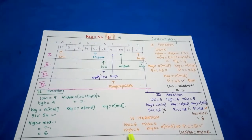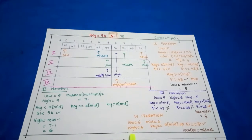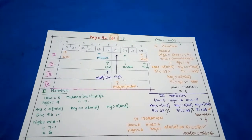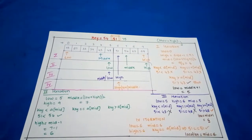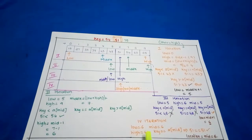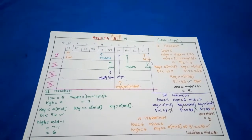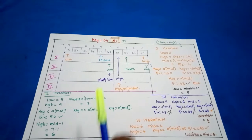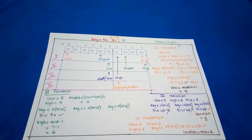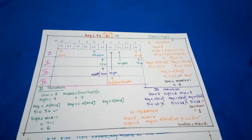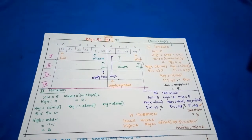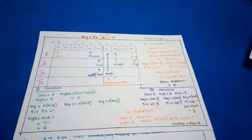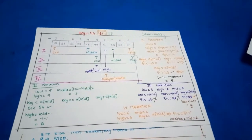In the fourth iteration, low = 6, high = 6, and mid = (6 + 6) / 2 = 6. All three values point to index 6. We check key == a[mid]: 51 == a[6] == 51, which is true. We return the mid value as the found location. The location of 51 is index 6.